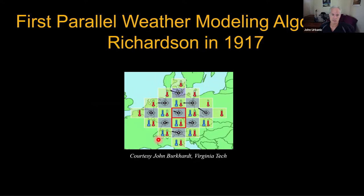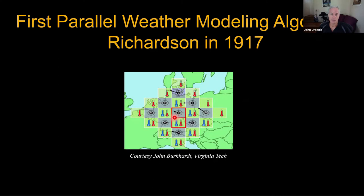Instead, we do everything in parallel. A guy named Richardson in 1917 recognized how to do this kind of problem in parallel. What Richardson had in mind was 64,000 meteorologists gathered in a large facility — each meteorologist responsible for a small patch, maybe a county, doing the weather modeling. All that we need to figure out the weather 10 minutes into the future is to communicate with four neighbors — north, east, south, and west — what the weather is. To figure out weather 10 minutes ahead, all I need to know is my immediate neighborhood.